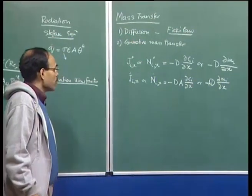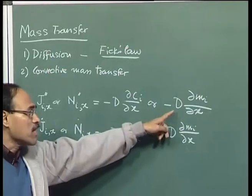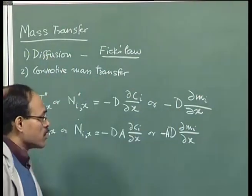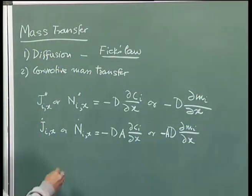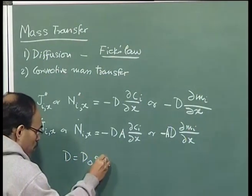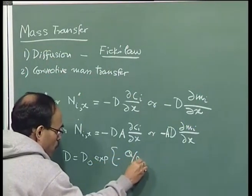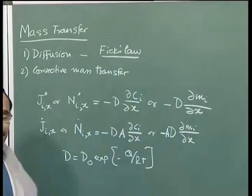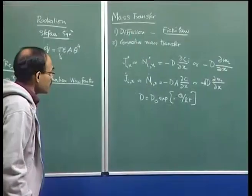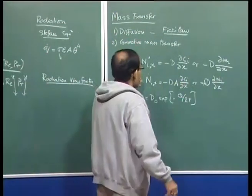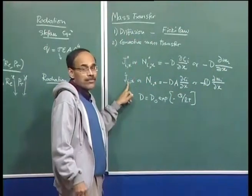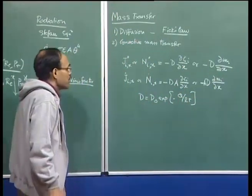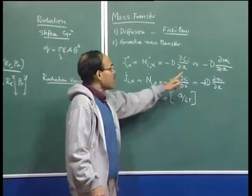For a single diffusing component, concentration and activity are synonymous, so there is no issue. D is the diffusion coefficient, which is a thermally activated process following an Arrhenius-type equation: D = D₀ exp(−Q/RT). The diffusion coefficient is a state property — just like thermal conductivity, it depends on temperature. If you know the temperature, you know the diffusion coefficient, and to know the flux you need the concentration gradient. There is a one-to-one similarity between D and k.